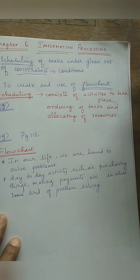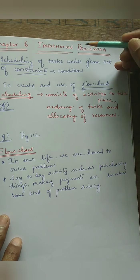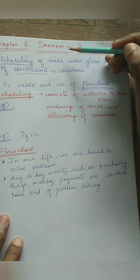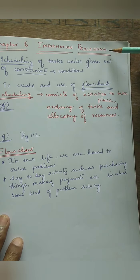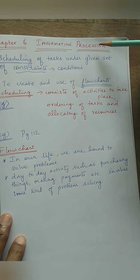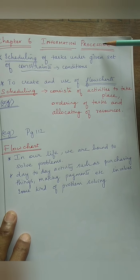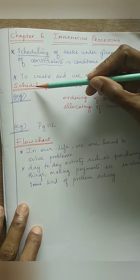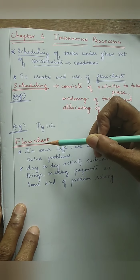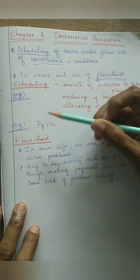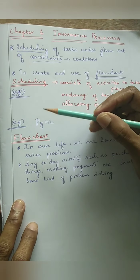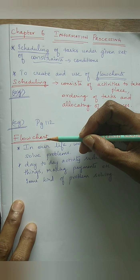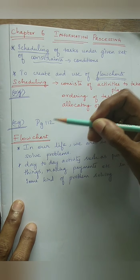Good morning students. Let us start with the new chapter, chapter 6, Information Processing. Under this information processing, we are going to see two things: one is called scheduling and the other one is called the flowchart.